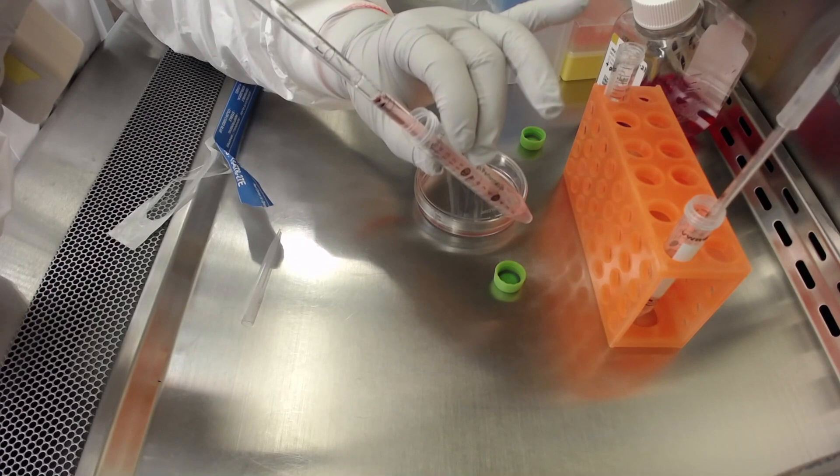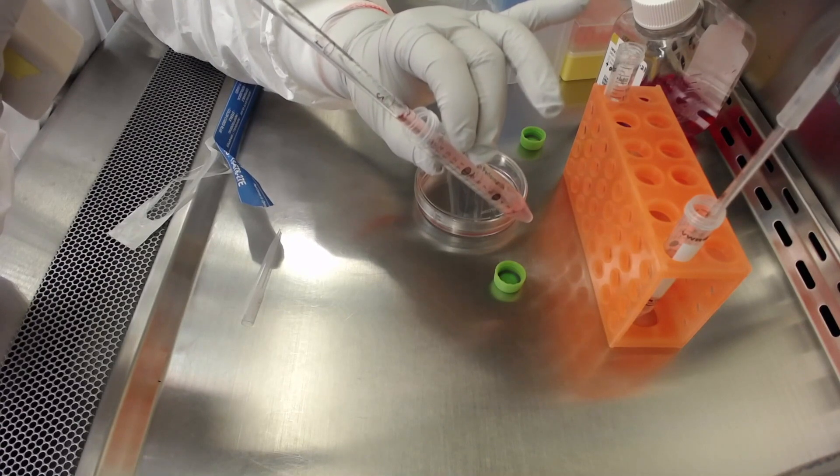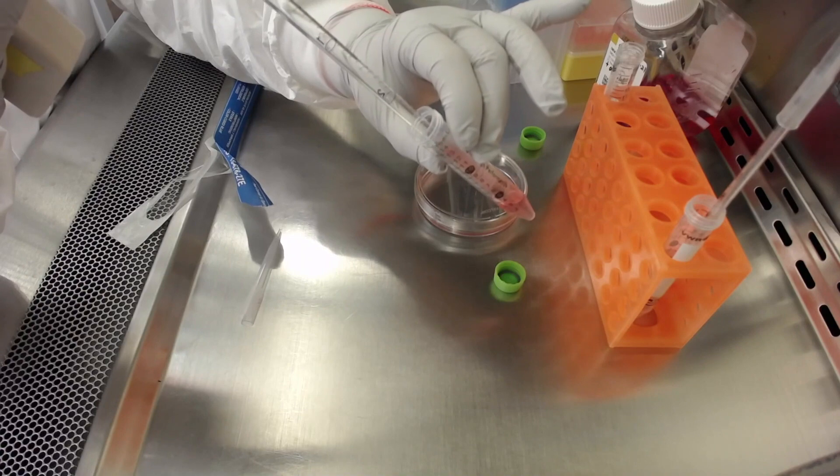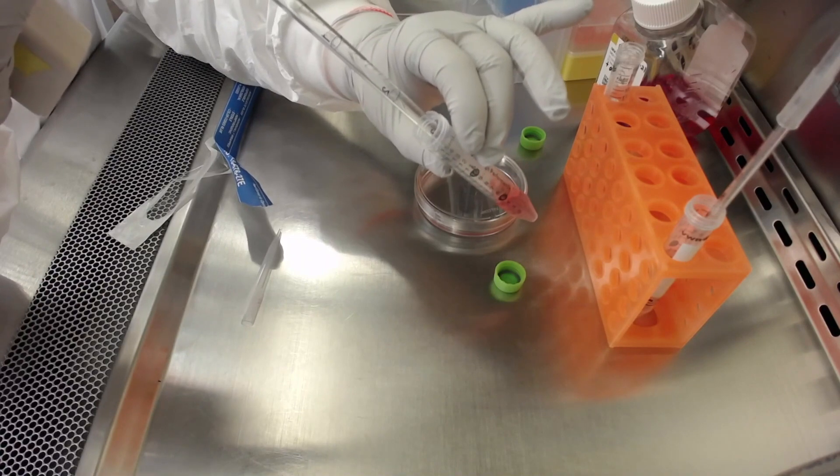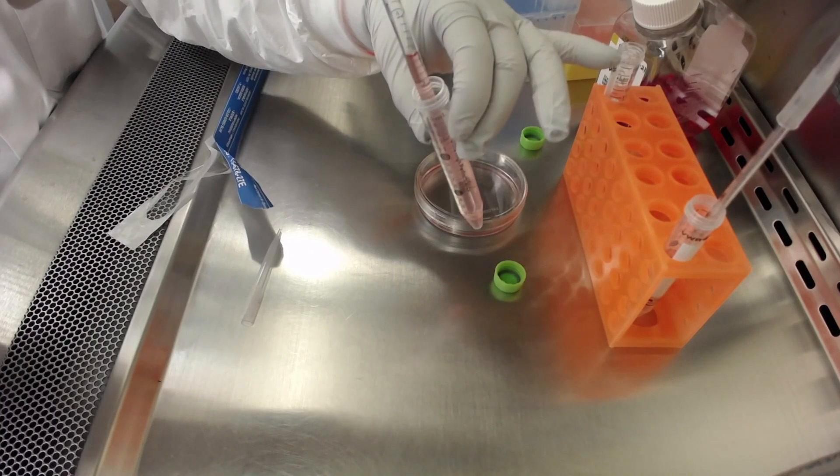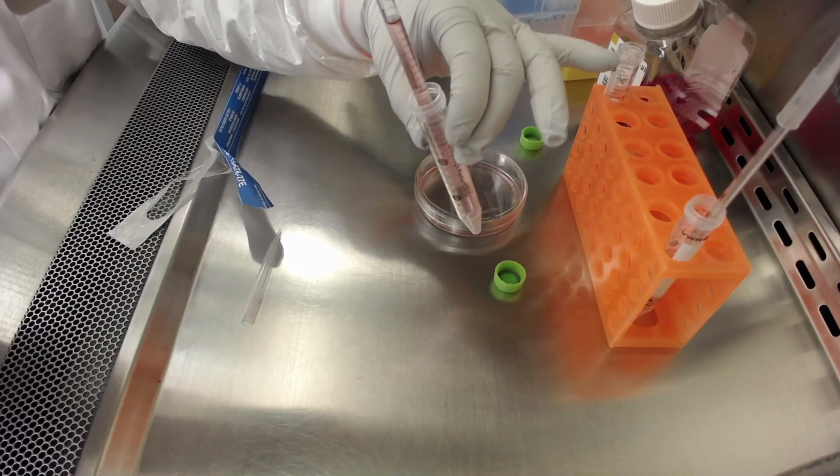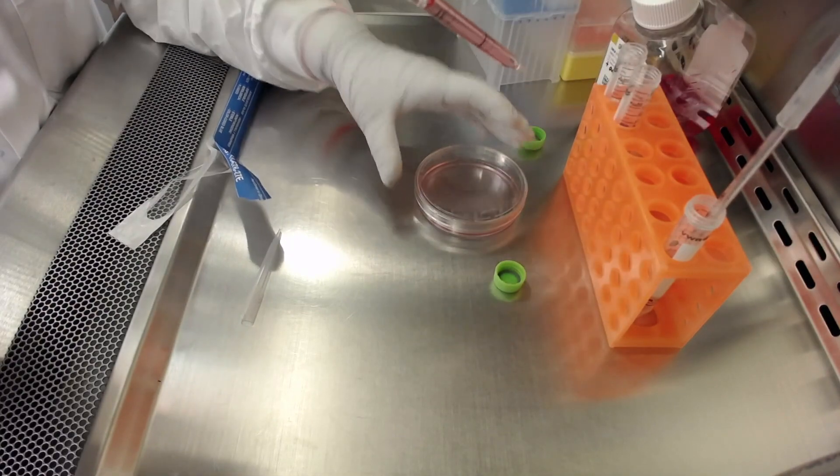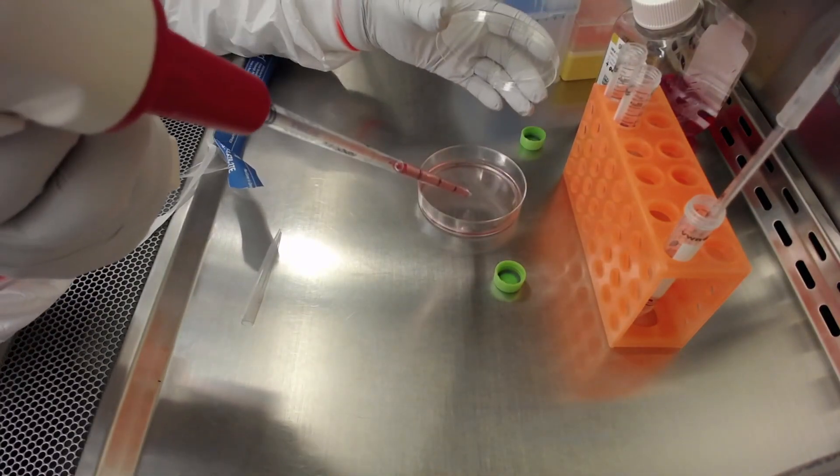Using a 5 milliliter glass serological pipette, re-suspend the cells in the 2 milliliters of media previously added to the tube. When re-suspending the cells, it is important to be gentle in order to preserve the cell clumps and to avoid making a single cell suspension. We advise to pipette the cell suspension up and down no more than 5 times.